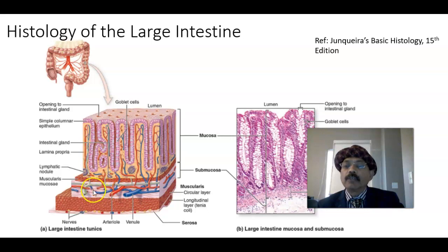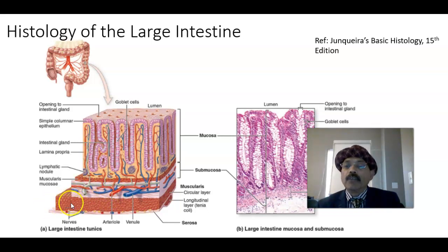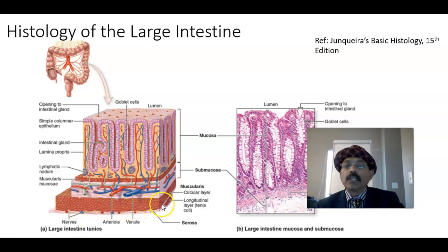Then we have a very vascular submucosa — there is dense irregular connective tissue. Then we get the muscularis externa, which has two layers: inner circular muscle layer and outer thin longitudinal muscle layer. This longitudinal muscle layer in three places is very much thickened. These are called taenia coli, and they help in propulsion and also help in peristalsis.